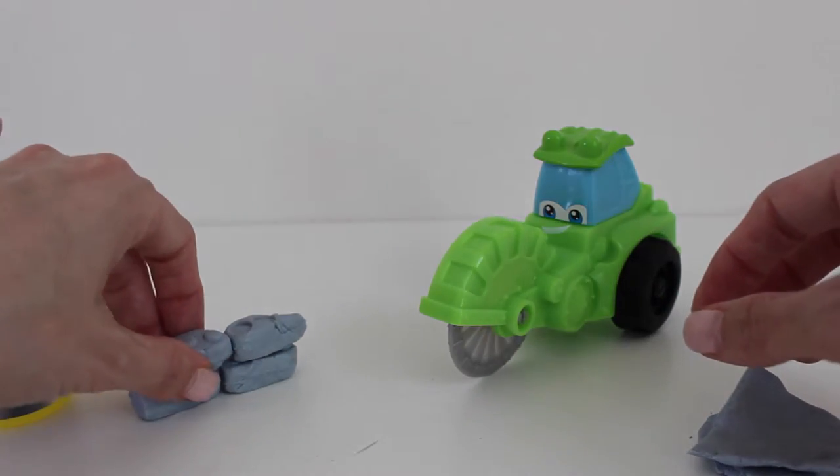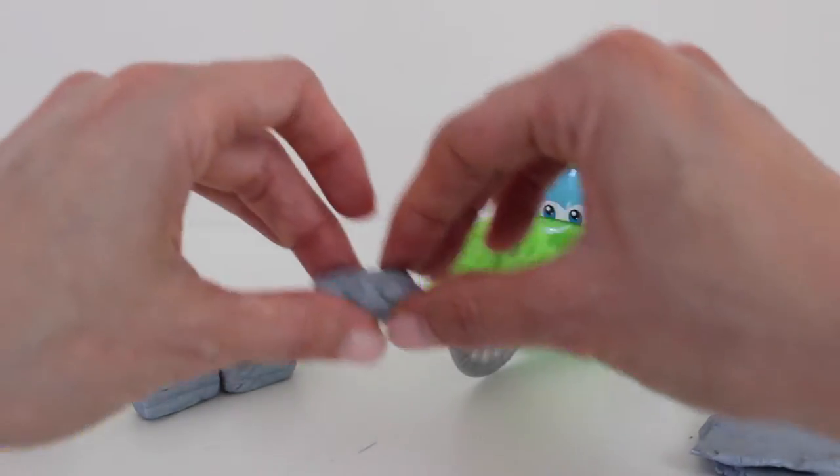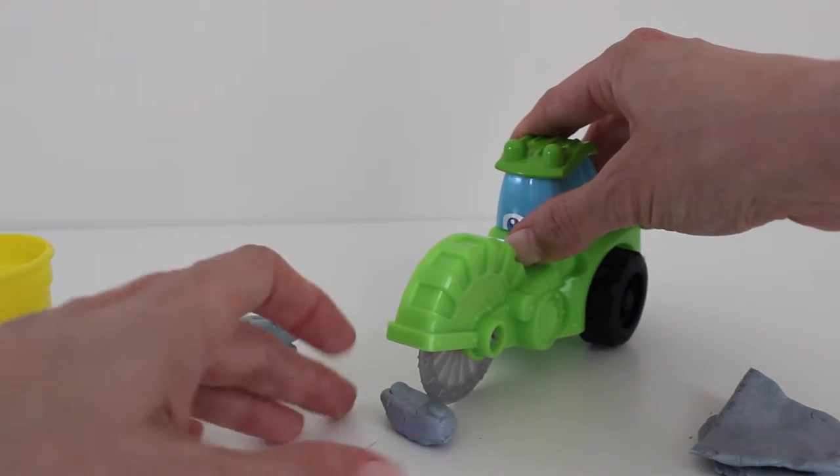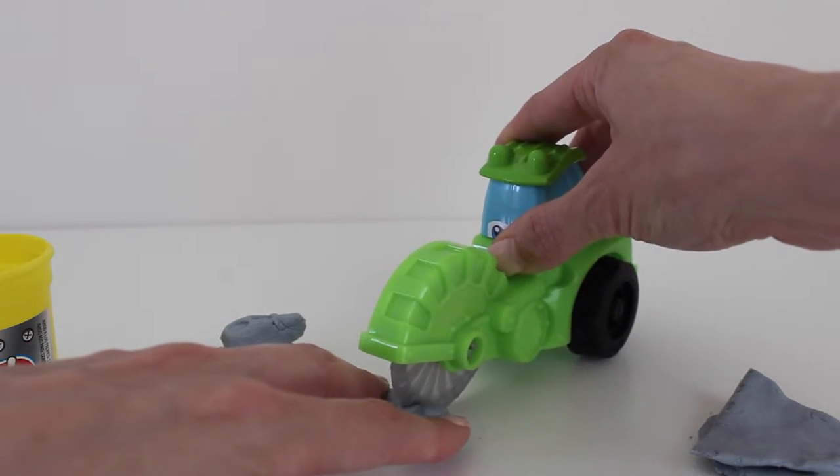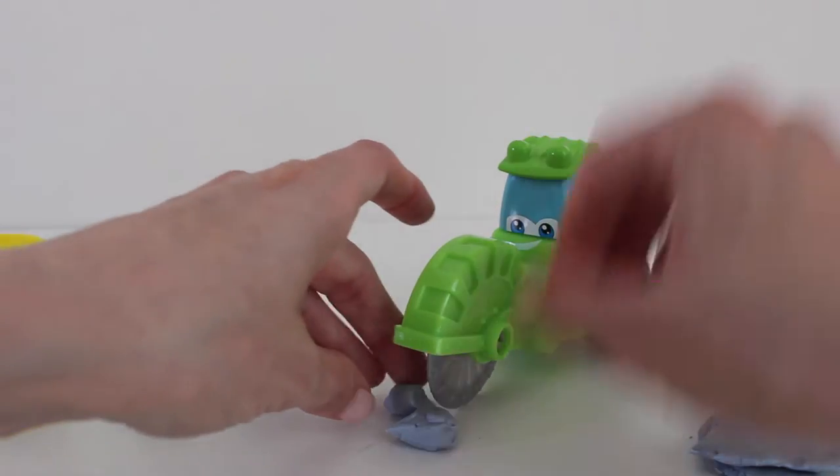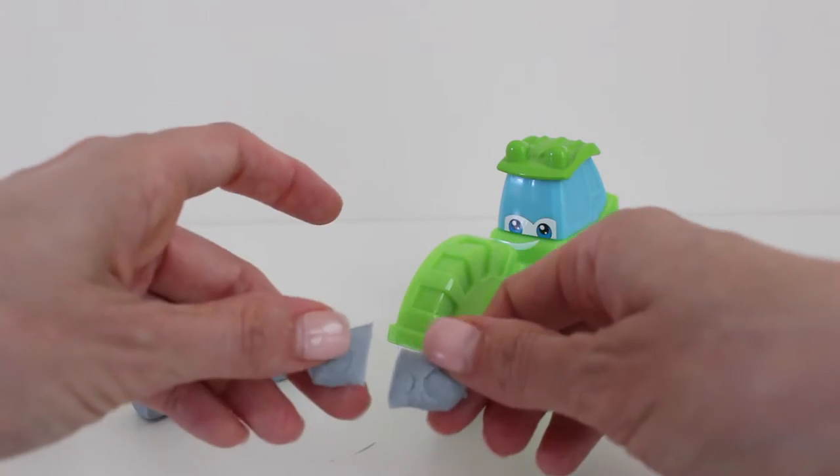Now I bet that this cutter truck is so good it could even cut through one of the cement blocks that we made. So let's try that. And it cut right through and our cement block is now in two pieces.